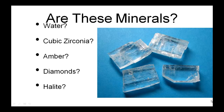Minerals must have a definite composition, though it may be a complex formula. This mineral has a simple one: table salt, NaCl. Since nature is quite messy, there's probably other things in there. Is this a mineral? Yes, it meets all the criteria. It's crystalline, solid, naturally occurring, inorganic — not made by an organism — and it has a specific chemical composition.